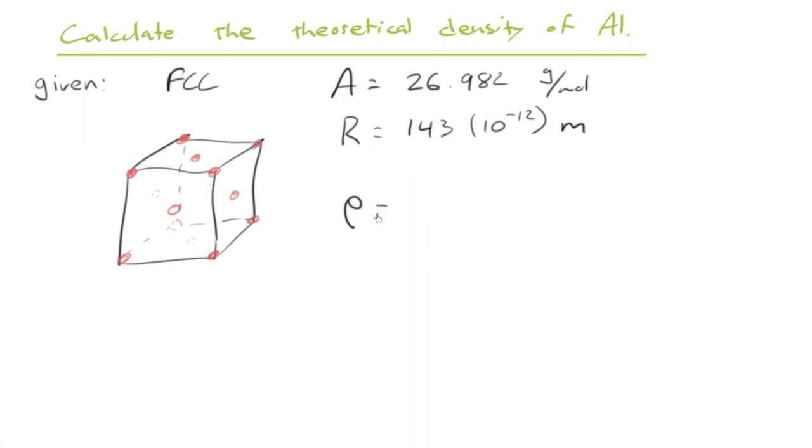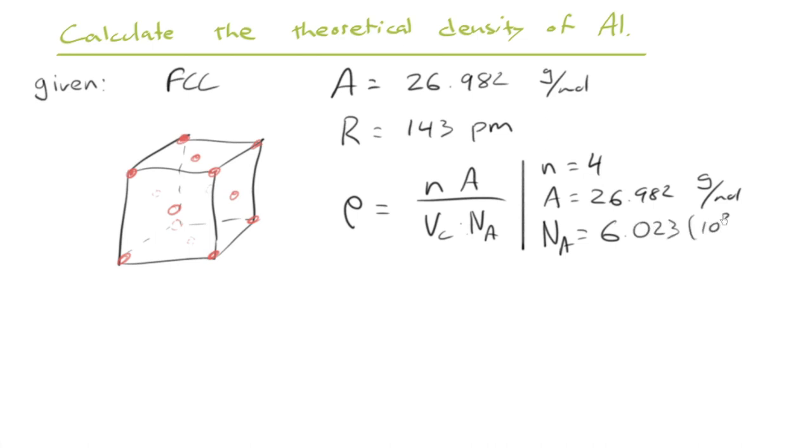And what we want to do is calculate the theoretical density. So, I'll write out the equation here. It's going to be the number of atoms times the molar mass, divided by the volume of the unit cell, and Avogadro's number there. So, what I like to do is draw a little vertical line, and then summarize what I know. I've done my little sketch. I know that there are four atoms inside the FCC unit cell, four complete spheres. I have the molar mass, 26.982. Just to show you my technique, the way I like to process. 143 picometers. I'm going to write it out like that. And then, when I write them over here, beside my little vertical line, I always like to convert to base SI units.